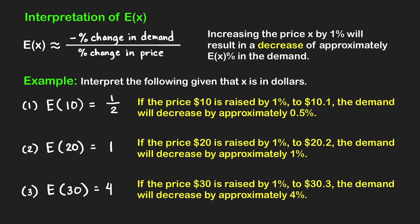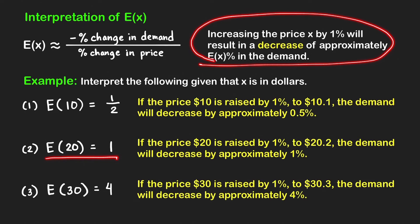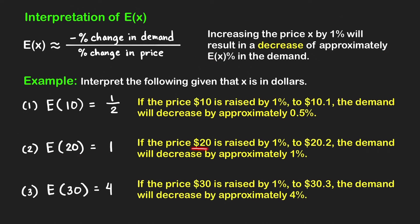Next, how do we interpret e of 20 equal to one? Using this interpretation of e of x, if the unit price of $20 is raised by one percent to $20.20, then the demand will decrease by approximately one percent. This means that a small percent increase in the price would result in almost the same percent decrease in the demand.